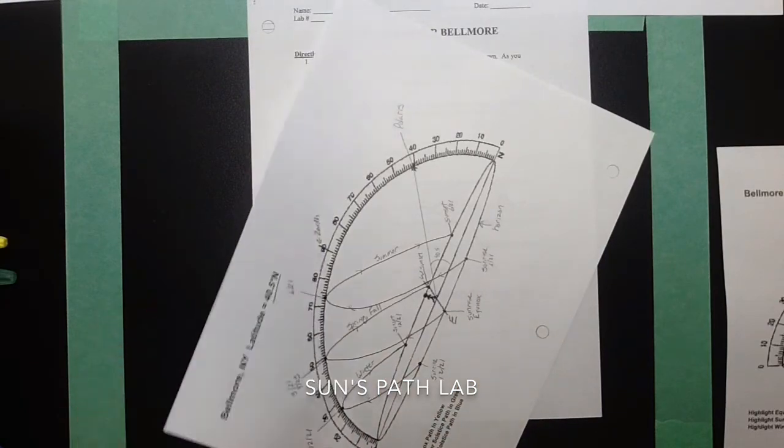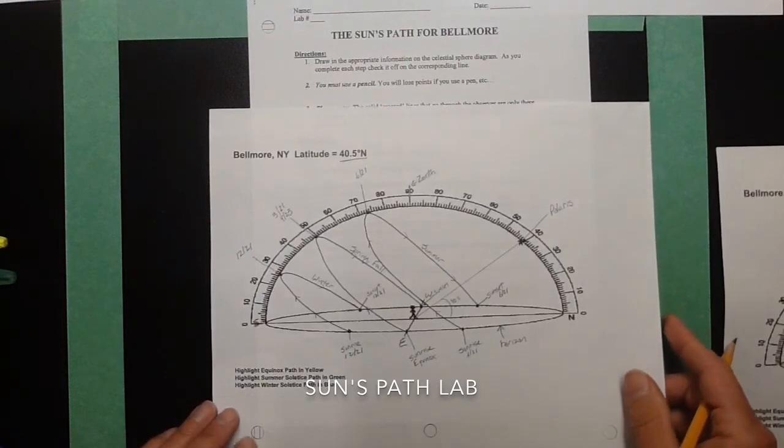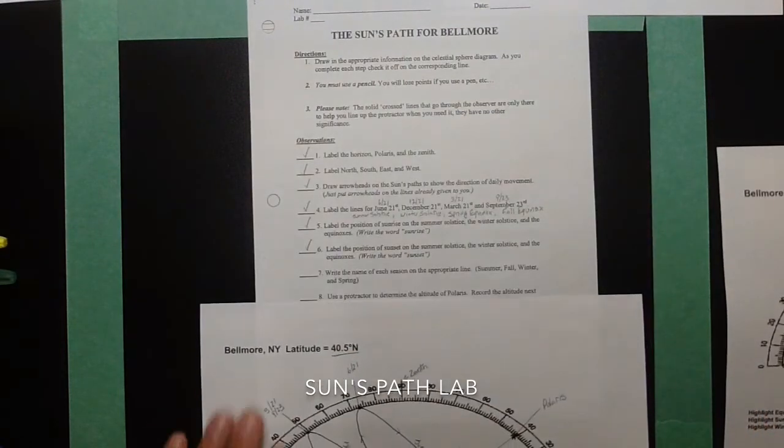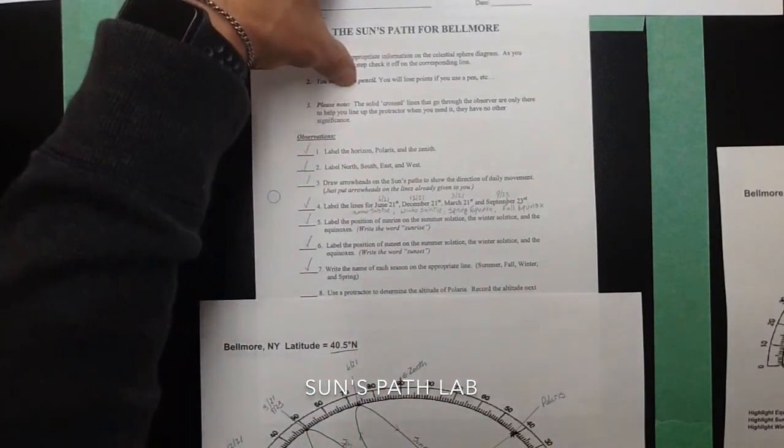And then the lowest, shortest path is going to be winter. In New York, honestly, that's about nine hours of daylight. So, we have accomplished number seven. We've done all of those.